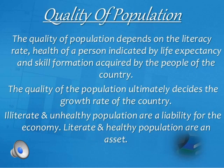The quality of population is determined by literacy rate, health, and skills. An illiterate and unhealthy population can be a liability for the economy, while a literate and healthy population can be an asset. Literate and healthy people contribute towards the GDP — Gross Domestic Product — of the country. National income is the total amount of money earned within the country.